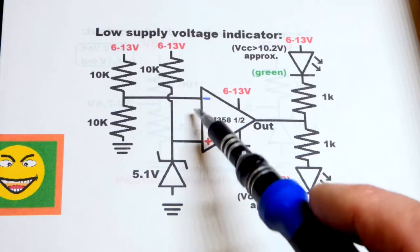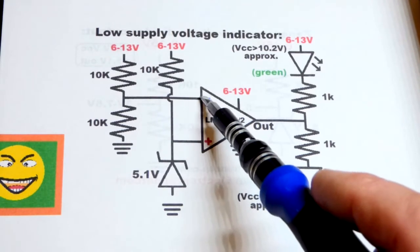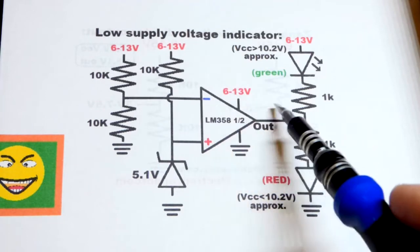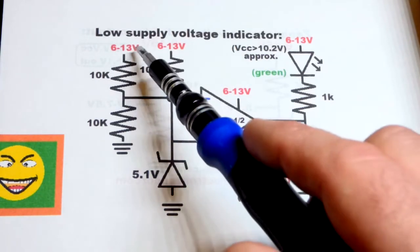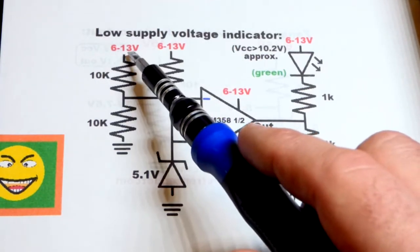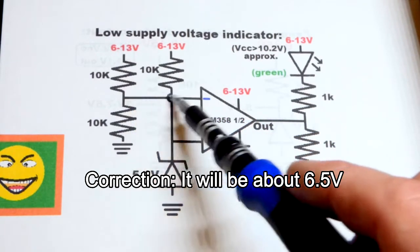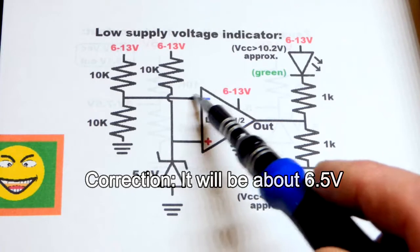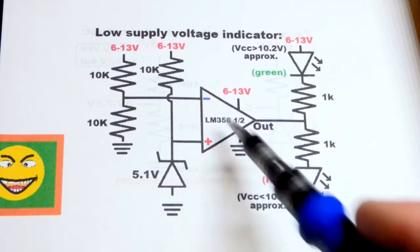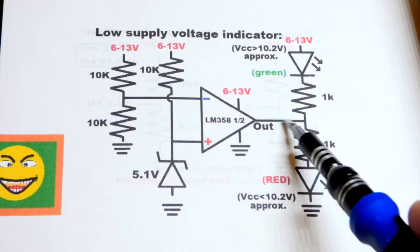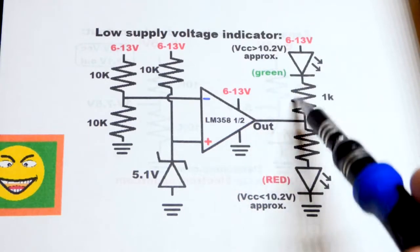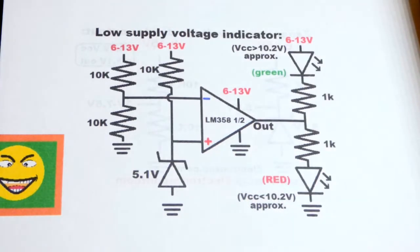When it's higher, at 13 volts it's going to be about 7.5 volts, that's higher than five. Since it's the inverting input, when this one's higher we'll have a low output and the green LED will light up.